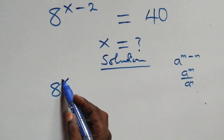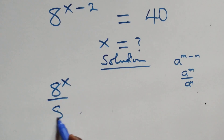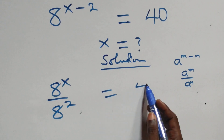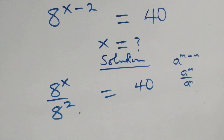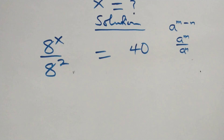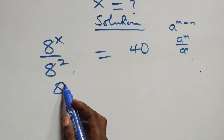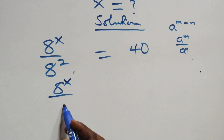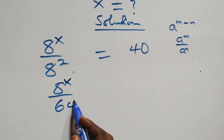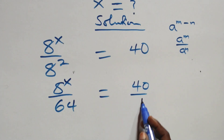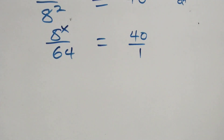This becomes 8 raised to power x over 8 squared equals 40. We can rewrite this as 8 raised to power x over 8 squared, where 8 squared is 64, which equals 40 over 1.